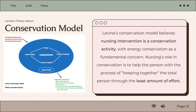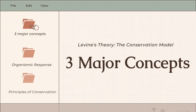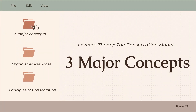Nursing's role in conservation is to help the person with the process of keeping together the total person through the least amount of effort. There are three major concepts in her conservation model theory: wholeness, adaptation, and conservation.